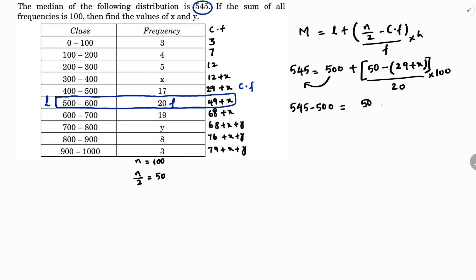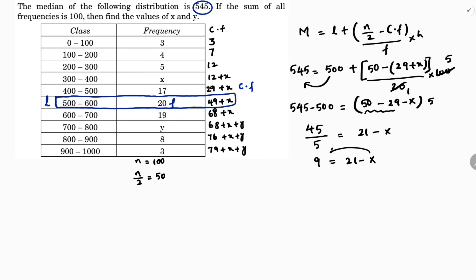Transposing: 545 minus 500 equals (50 minus 29 minus x) divided by 20, times 100. So 45 divided by 5 equals 21 minus x, since 50 minus 29 is 21. Therefore 9 equals 21 minus x, giving x equals 12.